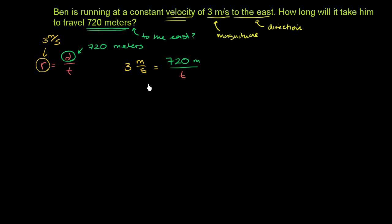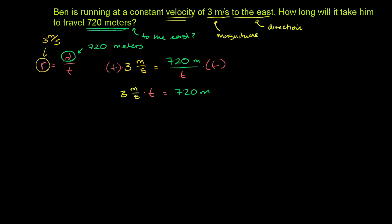We can algebraically manipulate this. Multiply both sides by time: 3 meters per second times time equals 720 meters, because the time terms on the right cancel out. That makes sense unit-wise, because time is in seconds, which cancel with the seconds in the denominator, leaving just meters.